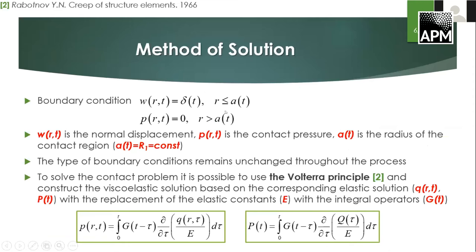Boundary conditions of this problem have the following form. In the contact region we have the displacement, and on the other boundary we know the stresses. W is the normal displacement of the boundary of the layer, P is the contact pressure, and A is the radius of the contact region. For a flat-ended indenter, the contact region is constant and in our case it is equal to the radius of the cylinder, so the type of boundary conditions remains unchanged throughout the process.